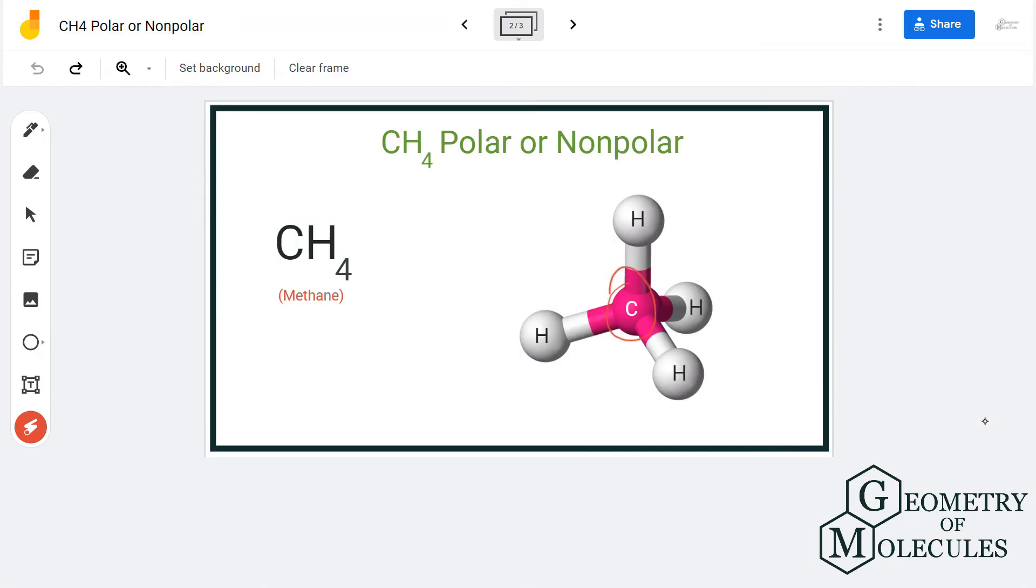When you calculate the difference of electronegativities of carbon and hydrogen atoms, it is very less. So even if there is a dipole moment between carbon and hydrogen atom, it will be nullified because of the directions of these hydrogen atoms and the arrangement in this plane.